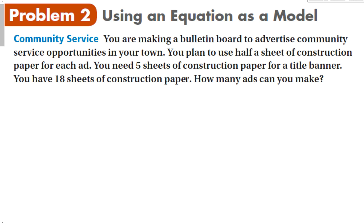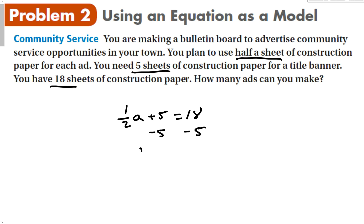You're making a bulletin board to advertise community service opportunities. You plan to use half a sheet of construction paper for each ad, you need 5 sheets for a title banner, and you have 18 sheets total. How many ads could you make? We know it takes half a sheet for each ad and 5 for the title, and altogether this equals 18. So the equation is: one-half times a plus 5 is equal to 18. To solve, subtract 5 from both sides, giving one-half a equals 13.